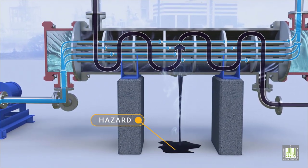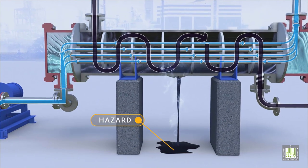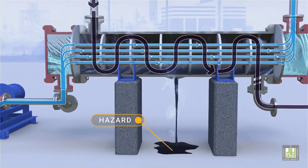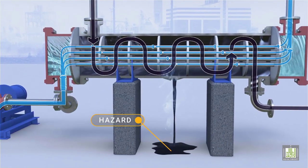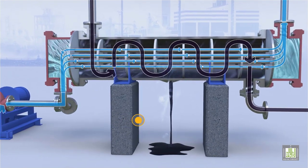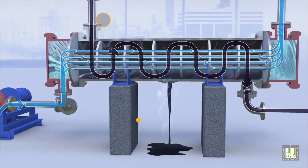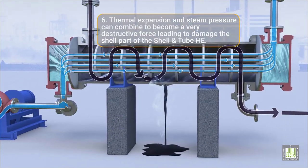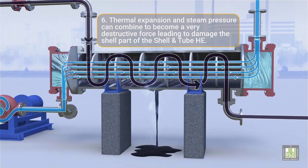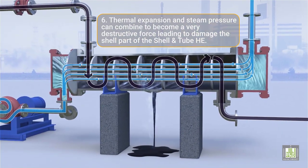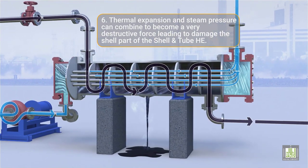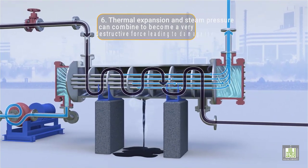Uncontrolled mixing of water with hydrocarbons can generate high-pressure conditions and can damage systems that are not equipped with pressure-relief devices. Thermal expansion and steam pressure can combine to become a very destructive force, leading to damage of the shell part of the shell and tube heat exchanger.